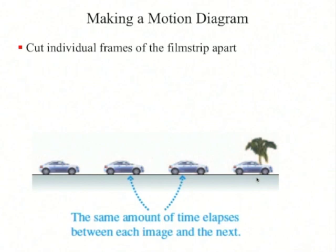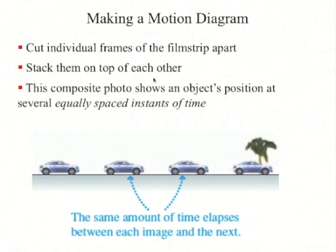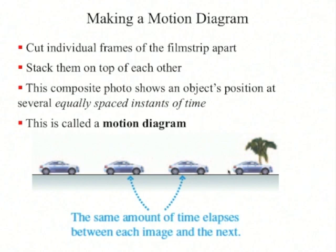To make a motion diagram, imagine that you cut the individual frames of the filmstrip apart and stack them on top of each other so that you can see the multiple frames all at once. This is called a motion diagram. An object with multiple positions in a motion diagram is moving, and the same amount of time elapses between each image and the next.